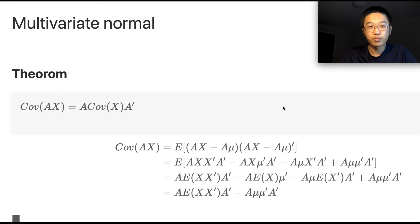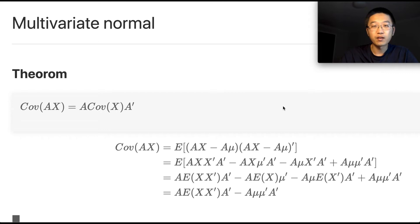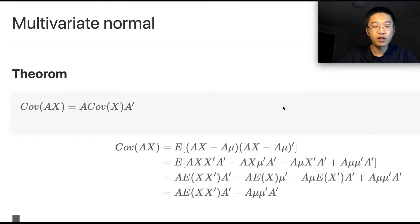Welcome to my channel, predicting the future. Today we want to derive the formula of the density function of a multivariate normal random variable. We'll do that step by step. Before that, we need to talk about some theorems and some definitions.